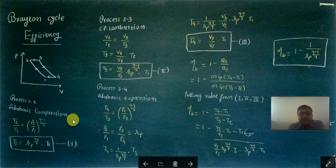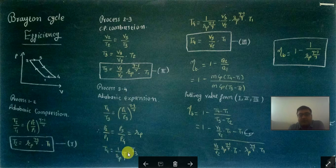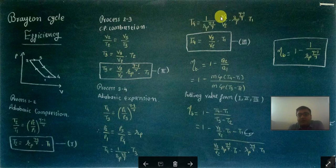Taking T4 divided by T3 equals P4 by P3 raised to gamma-1 upon gamma. From the diagram, P4 equals P1 and P3 equals P2, so P4 by P3 equals 1 upon Rp. Therefore T4 equals (1 upon Rp raised to gamma-1 upon gamma) into T3. Substituting T3 equals (V3/V2) into Rp raised to gamma-1 upon gamma into T1, we get T4 equals (V3/V2) into T1.